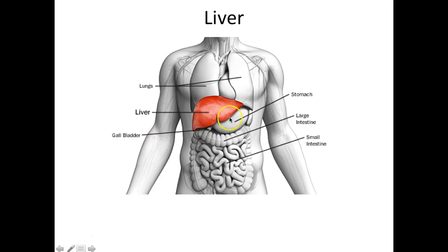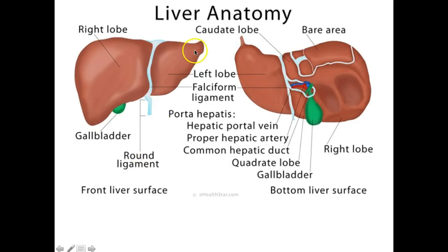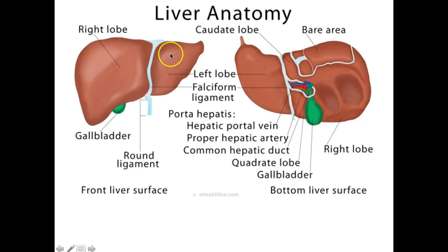Next, we go to the liver. The stomach is on the left side, and on the right side we have the liver. The liver is the largest gland in your body, weighs about three pounds in the average adult, and is located under the diaphragm, mostly contained in the rib cage. The liver has four lobes: the right lobe, which is the largest; the left lobe; the caudate lobe; and the quadrate lobe.